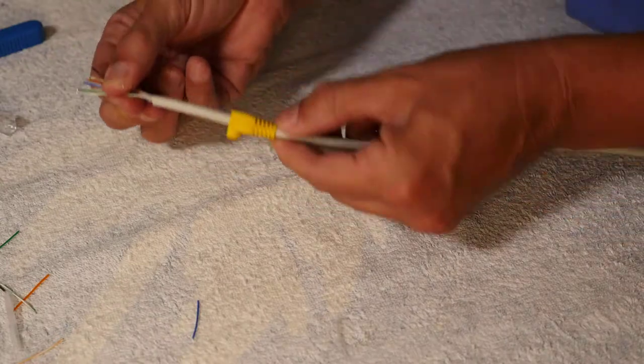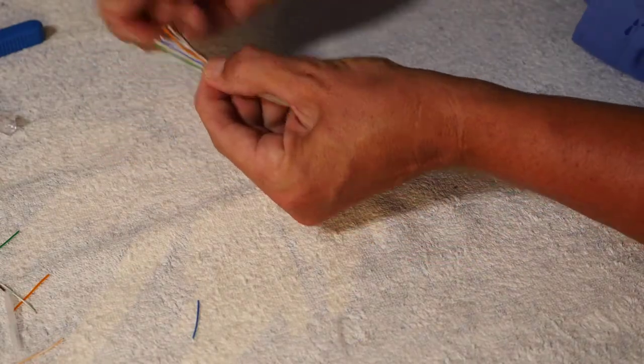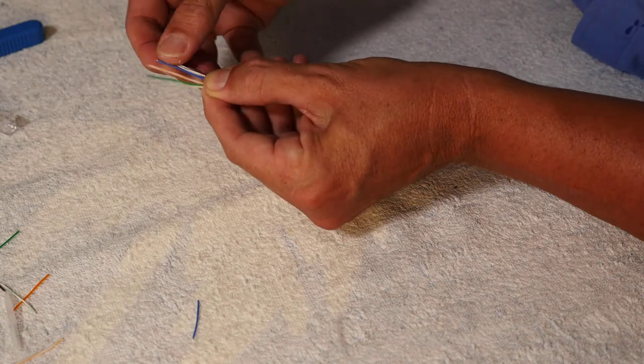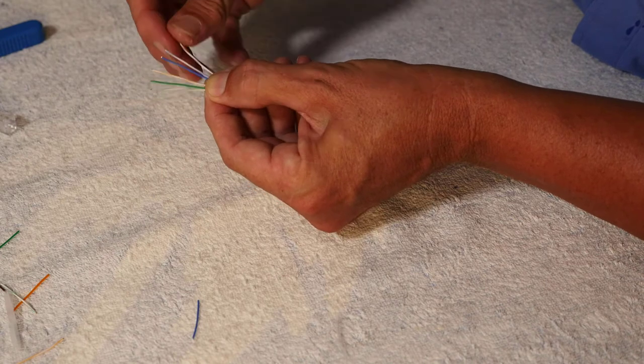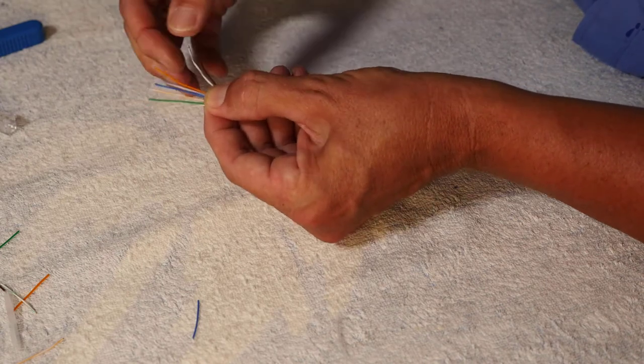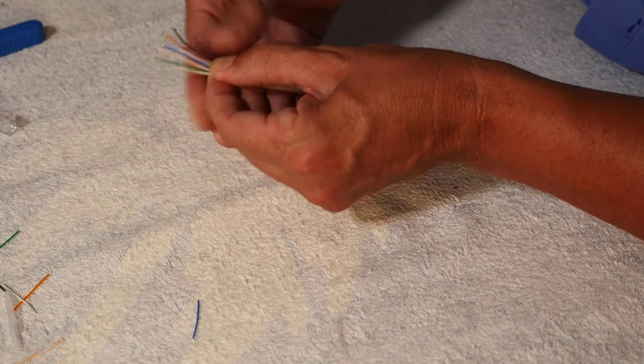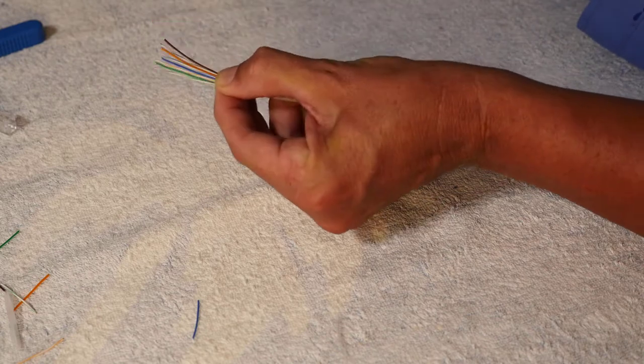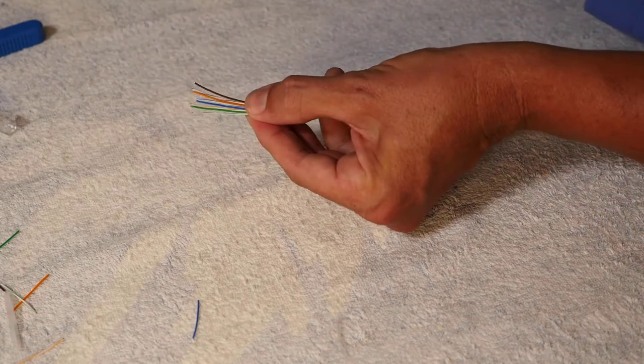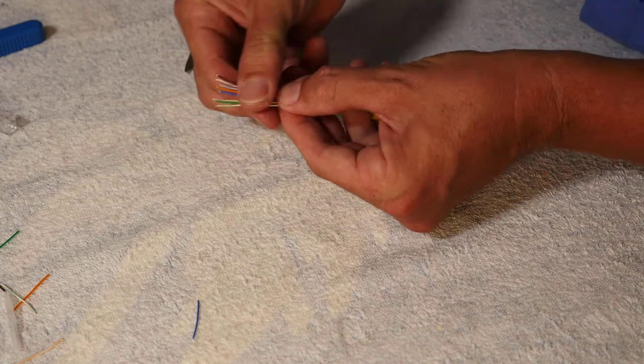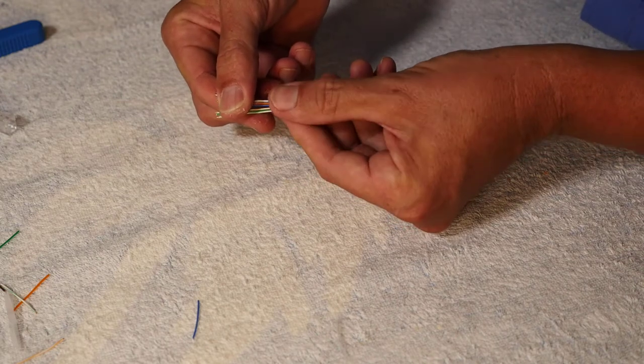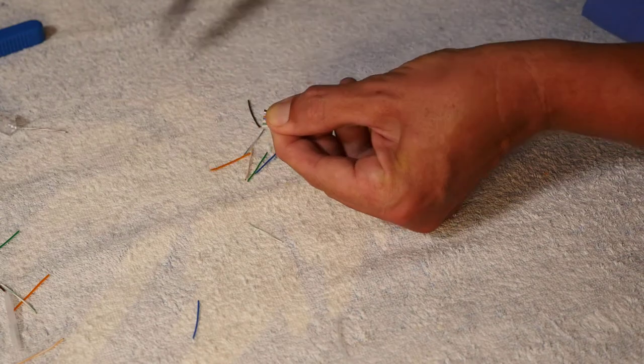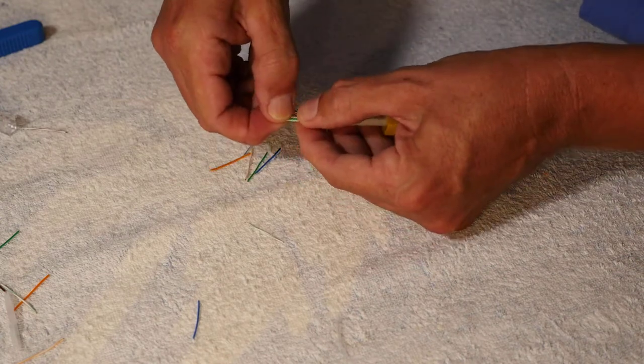I've put the boot cover on already, you might notice. We've got again the white green, green, white orange, blue, white blue, the solid orange, white brown, and then the solid brown. We stretch these guys out so they're all in the right order and that will match up with the cable at the other end. Again, one thumb's distance from the end of the cable - hold my thumb on there to hold everything in place, quick snip onto the towel which all goes in the bin.